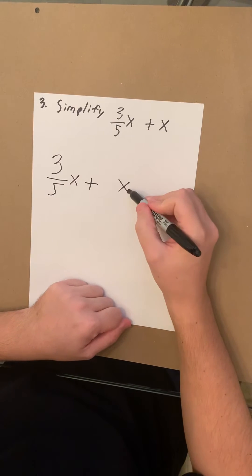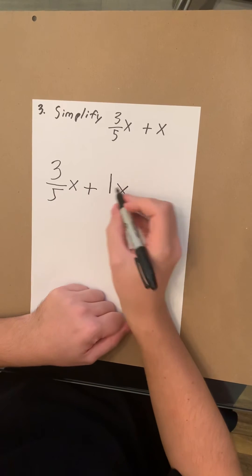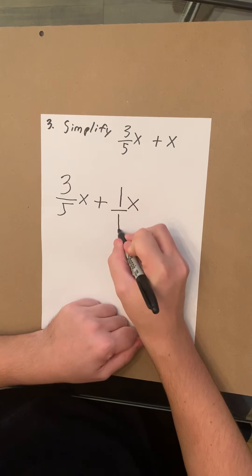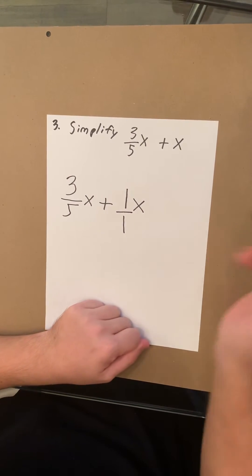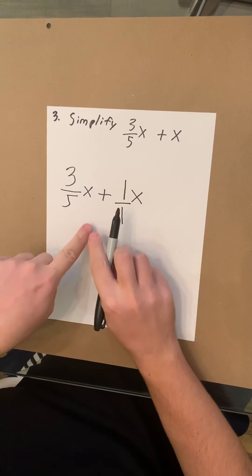Now when you see a variable alone, that's the exact same as 1x. And if you have a 1, that's the exact same as 1 over 1. So if you look at these, the 5 and the 1 are two different numbers, so you can't add them together.